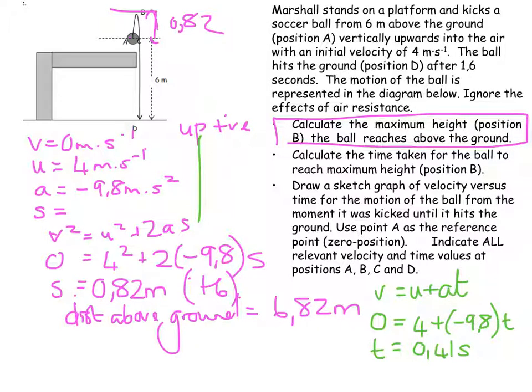Then it says draw a sketch graph of the velocity versus time for the motion of the ball from the moment it was kicked until it hits the ground. Use point A as the reference point, in other words zero. Indicate all relevant velocity and time values as A, B, C, and D.